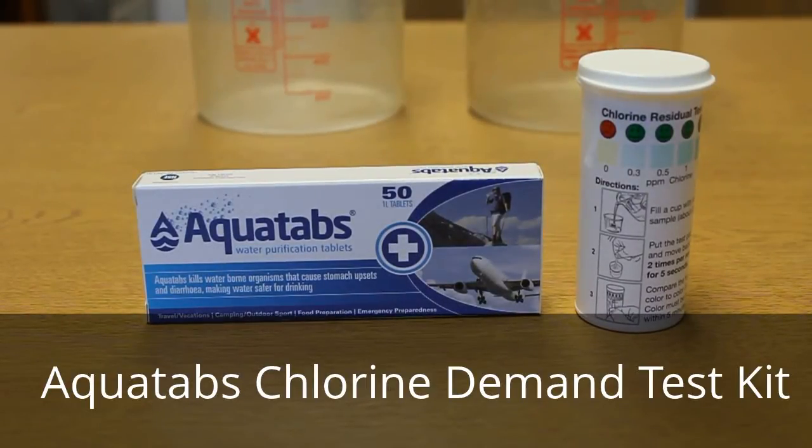This is a demonstration on how to use the Aquatabs test kit for testing the chlorine demand of water. The test kit consists of Aquatabs tablets, 3.5mg strength, and chlorine test strips.